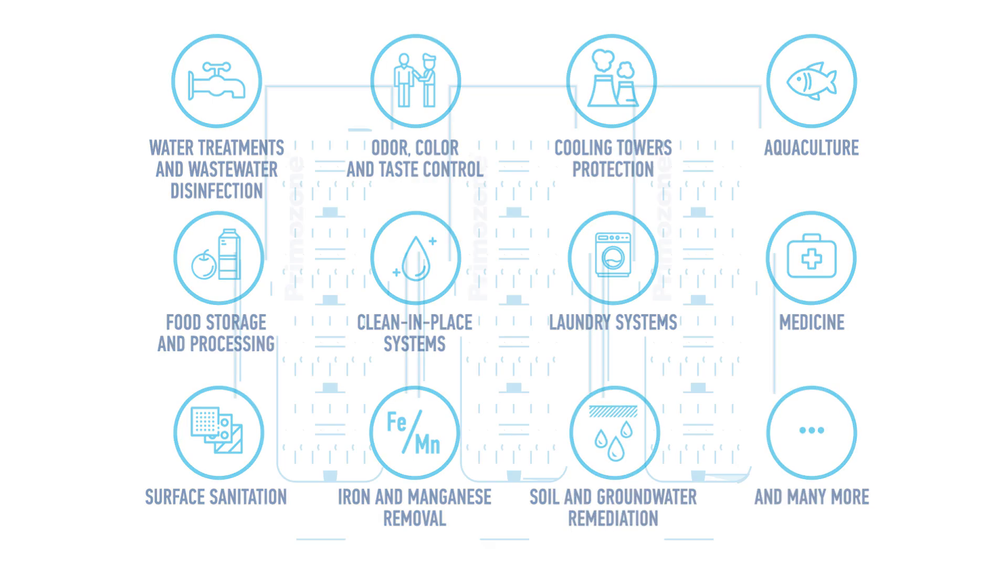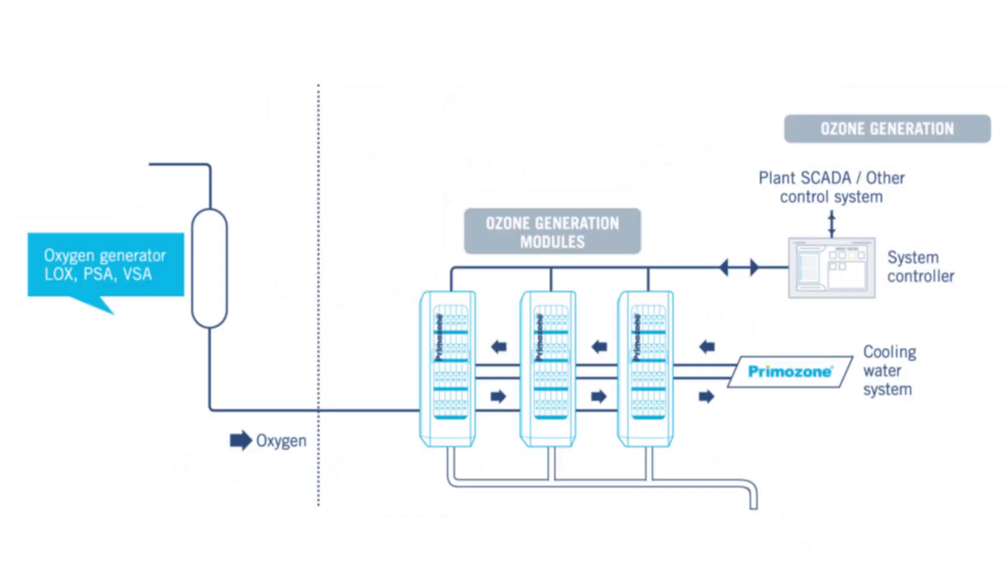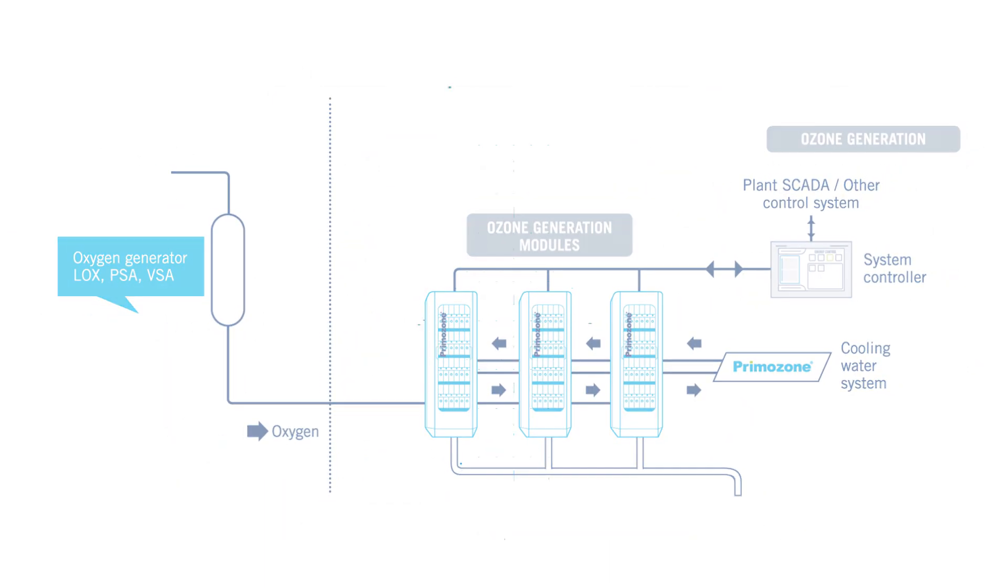Industrial ozone is produced with special installations that are mounted on site due to the gas's short lifetime. The only raw materials for production are oxygen and electricity.